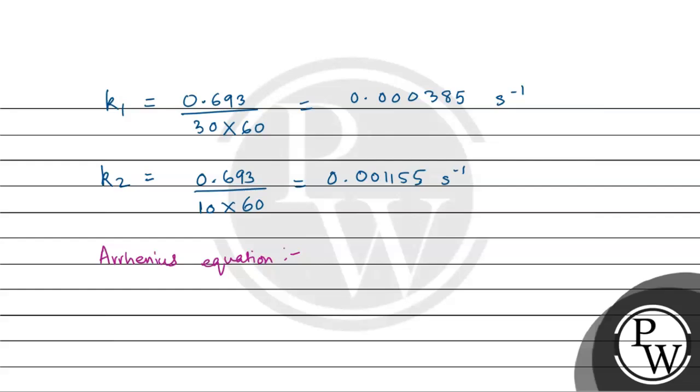According to the Arrhenius equation, log of K2 upon K1 is equal to Ea upon 2.303R times 1 upon T1 minus 1 upon T2.